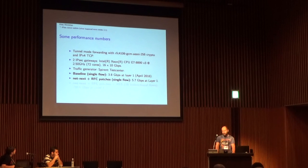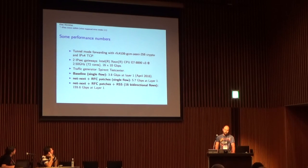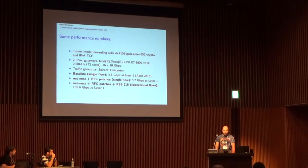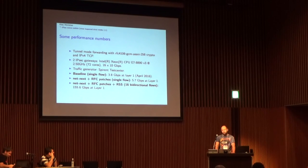For multi-flow, with NetNext, the RFC patches, and receive-side scaling with 16 bidirectional flows, I got 155 Gbit/s for IPsec — quite impressive. The theoretical limit of the setup is 160 Gbit/s, so we're almost there. The remainder is mostly protocol overhead for IPsec. With more network cards you could do better. I used 32 cores, and the packet size was 1,500 MTU.